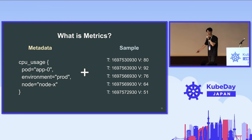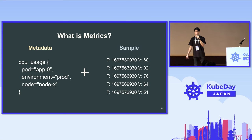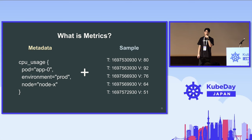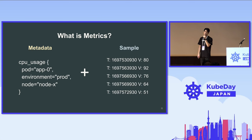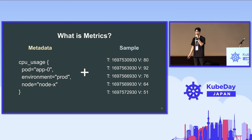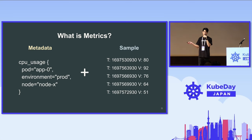In the first place, what are metrics? Metrics consist of two types of data: metadata and samples. For metadata, this is just key-value pairs — like font name, node name, and environment name. For samples, this is actual time series data — a tuple of timestamp and metric value.